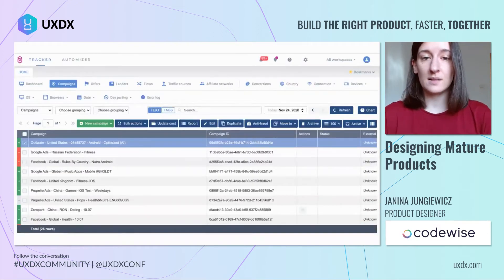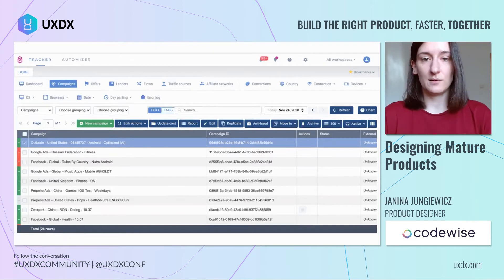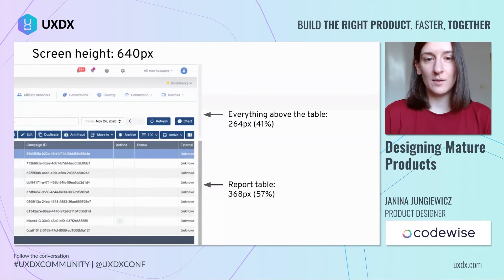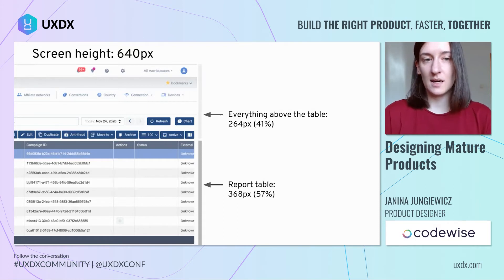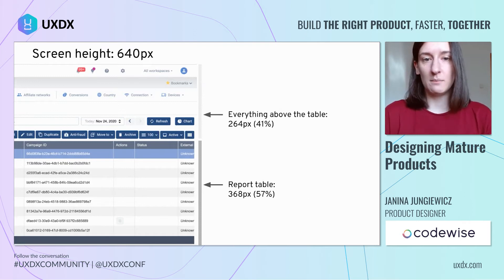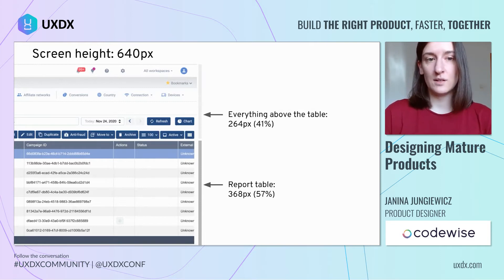As the table has been the centerpiece of Volume and the product grew bigger in features, all the new additions had their button representation added above the report table with data. To give you an example of what this means to our users, let's assume we have a screen that is 640 pixels in height and the table in this example is around 57% of the whole screen. So far, so good — it's not the best, but it is okay for our users.